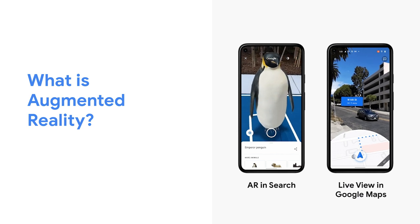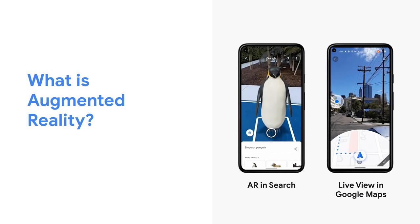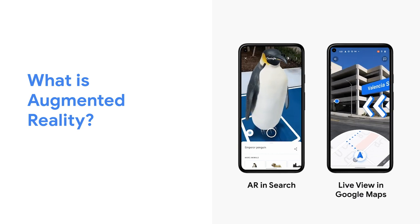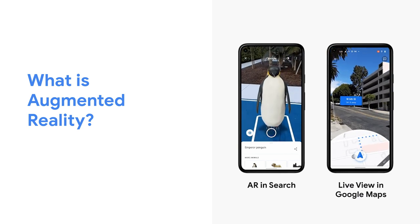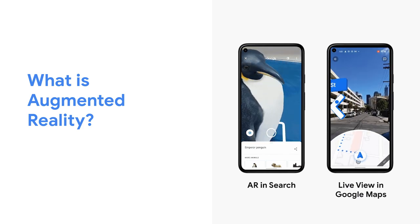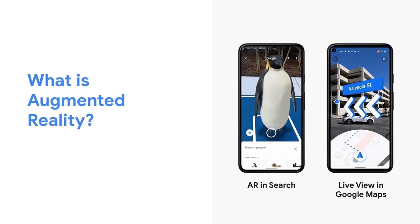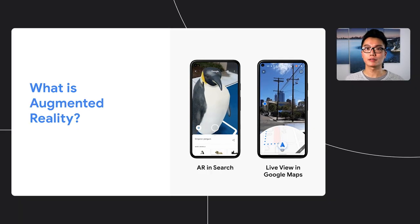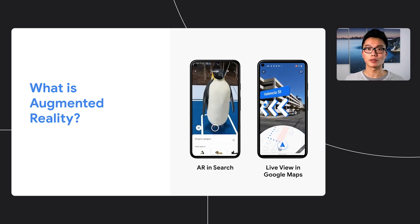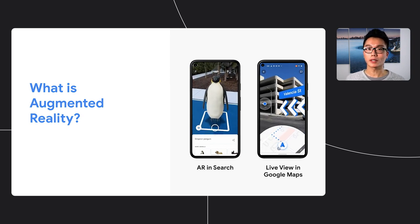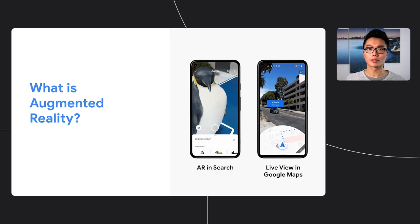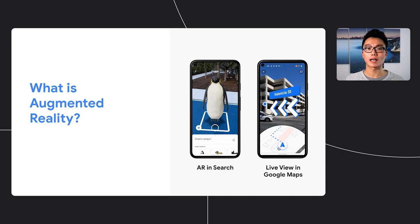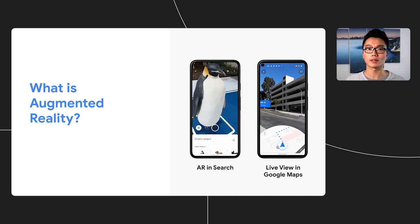AR helps improve our everyday lives and creates moments of genuine delight. For example, you can get helpful directions using AR walking navigation in Google Maps Live View — 3D arrows, pins, and street names pop up to help localize and navigate you to your next destination safely and on time. You can learn about animals in Google Search, bringing immersive 3D animals to life in your living room just by searching for them on Google. These experiences were made available on Android devices by leveraging ARCore, Google's developer platform for building mobile augmented reality experiences.